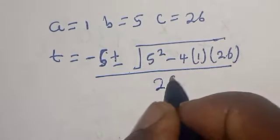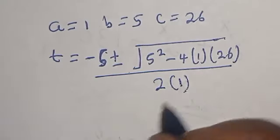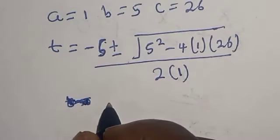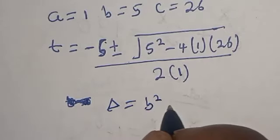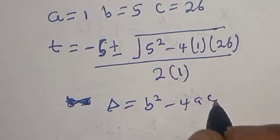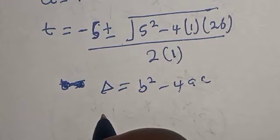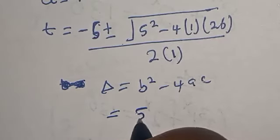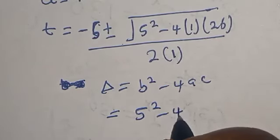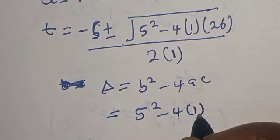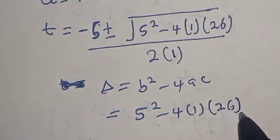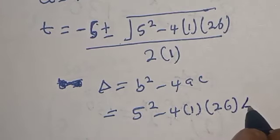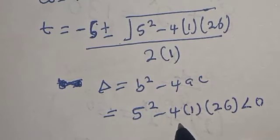Over 2 multiplied by 1. The discriminant is b squared minus 4ac, which equals 5 squared minus 4 times 1 times 26. Checking this value, it is less than 0, so this quadratic case is rejected.